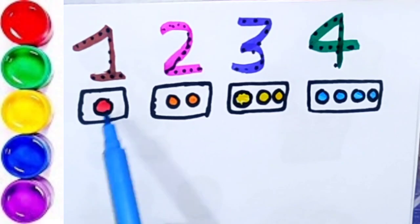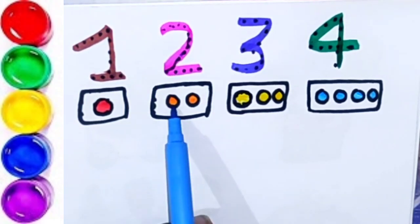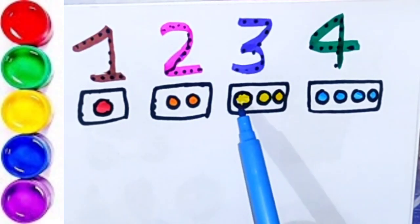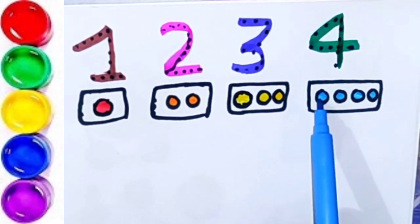One, one circle. Two, two circle. Three, three circle. Four, four, four circle.